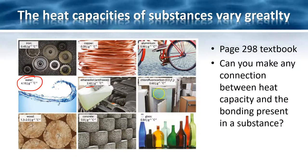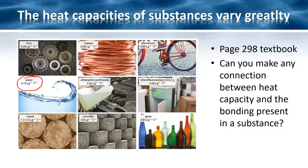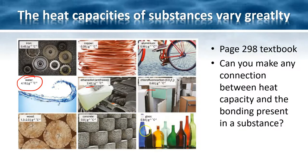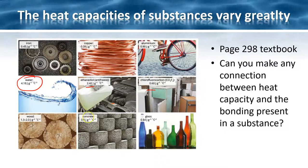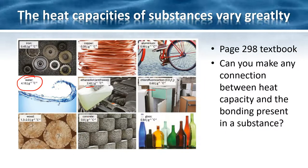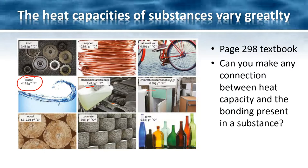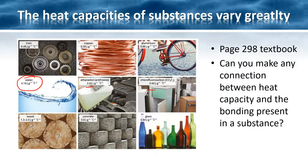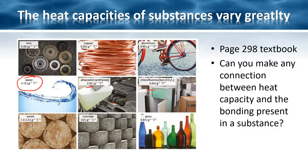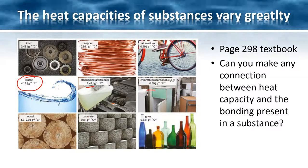The heat capacities of different substances vary greatly. You can see iron is 0.45, copper is 0.39, aluminium is 0.9, water is 4.18 or 4.2, ethane diol which we use as antifreeze is 2.42. Have a think - can you make some general assumptions regarding the bonding in these compared to their heat capacity? Write that down in your notes and we'll talk about it when we come to class.